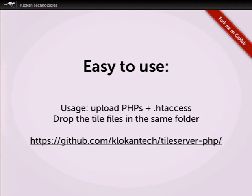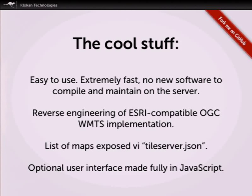You simply put the tiles into a folder on a web hosting server, put the PHP files from the project next to them with a simple .htaccess file on Apache, and once those tiles are in the same folder as the PHP files, you get an online service officially following the WMTS specification. This means you can open the maps in traditional GIS desktop clients like QGIS and ArcGIS Desktop, as well as modern web viewers and mobile devices.